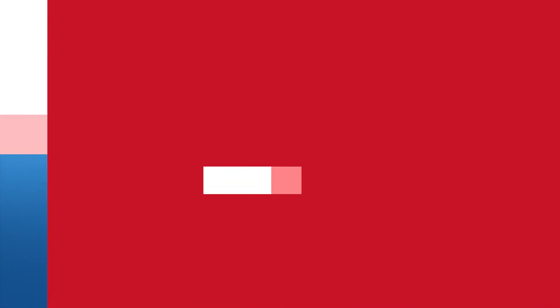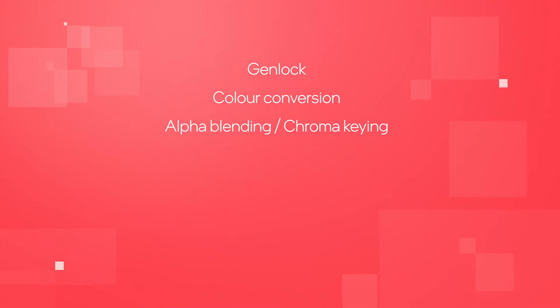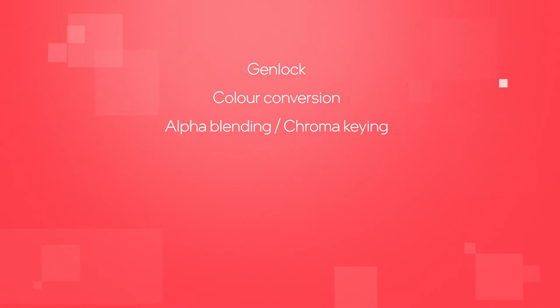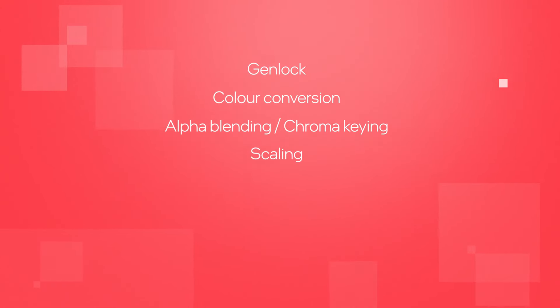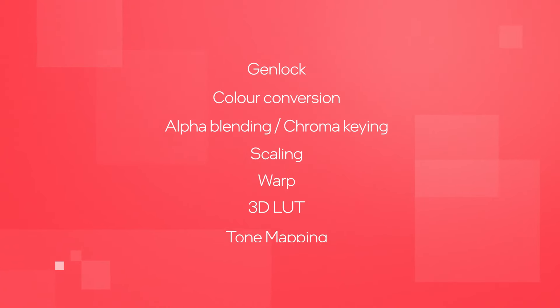These cores range from simple building block functions such as clocked video and gen lock, color space conversion, and alpha blending, to sophisticated processing functions that can implement programmable scaling, arbitrary nonlinear distortion correction, 3D lookup table, adaptive tone mapping, and many more.